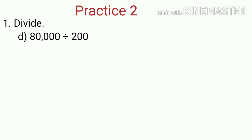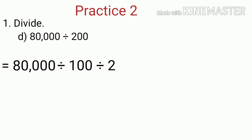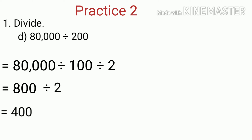Now, let's solve one question from practice 2, question number 1d: 80,000 divided by 200. Here, we can rewrite 80,000 divided by 200 by splitting 200 into 100 and 2. Because 80,000 divided by 100 divided by 2 is the same as 80,000 divided by 200. Now, in order to find the quotient of 80,000 and 200, we can first divide 80,000 by 100. We know that when a number is divided by 100, we can get the quotient by removing two zeros from the end of the number. So, after dividing 80,000 by 100, we get 800 as the quotient, because we have removed two zeros from 80,000. Now we divide 800 by 2. 800 divided by 2 is 400. So, 80,000 divided by 200 is 400.